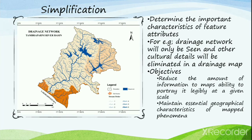The next step in map generalization after classification is the simplification process. In simplification, we determine the important characteristic features and attributes and eliminate all other unwanted details. Take the case of a drainage map — the drainage network will only be shown and other unwanted cultural details will be eliminated, so that the main features of the drainage and all water resources will be preserved and useful for the user.